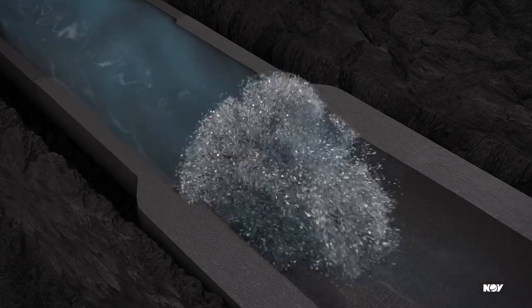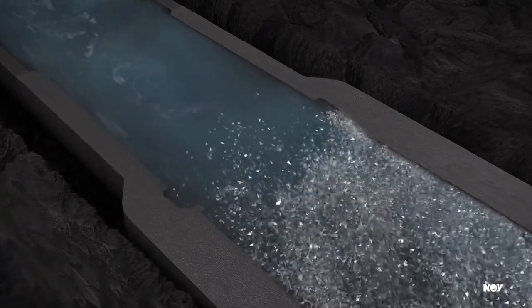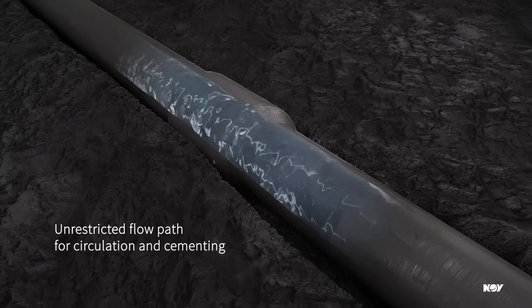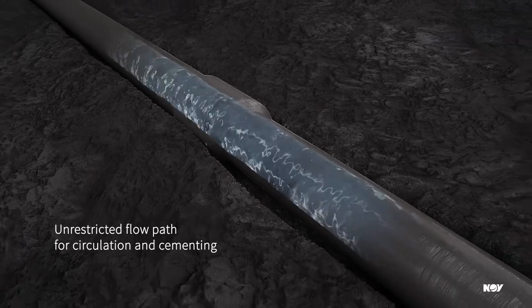The glass disc is then ruptured with applied pressure, creating an unrestricted flow path for circulation and cementing.